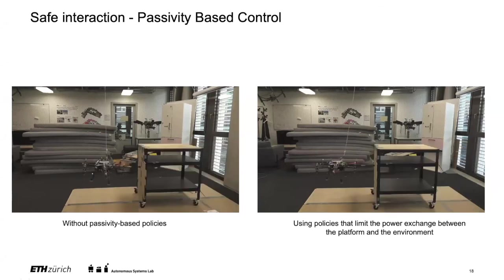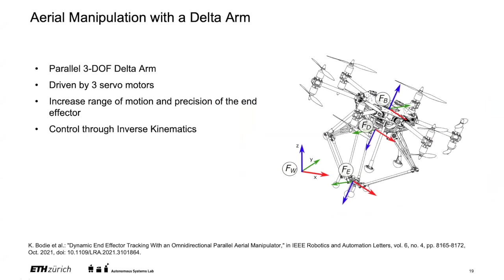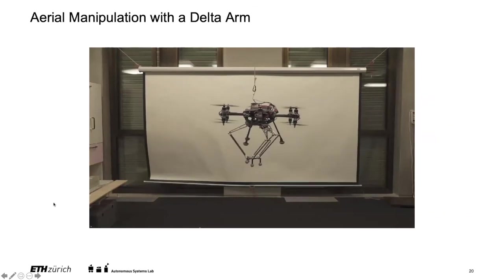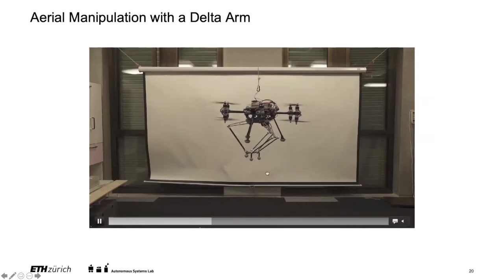The last topic is aerial manipulation with a delta arm. My colleague Karen started working on this last year — using a parallel three-degrees-of-freedom delta arm mounted to the platform, driven by three servo motors. This lets us individually adjust the end effector position relative to the platform, increasing range of motion and velocity but also precision. We can use end effector movement to compensate for movements of the main body. The end effector is controlled through inverse kinematics, and a cube trajectory tracking experiment showed nice initial results.